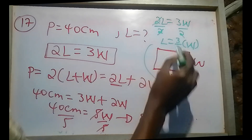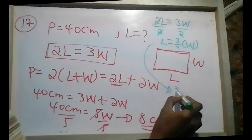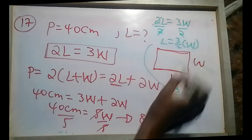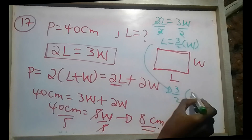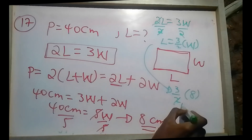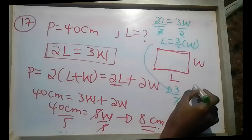Then using 2L equals 3W: 2L equals 3 times W, so L equals 3W over 2.